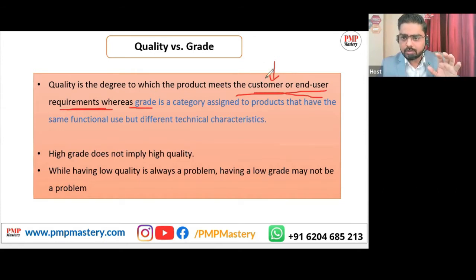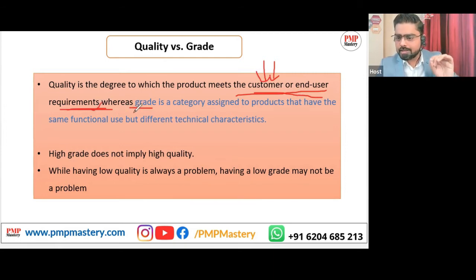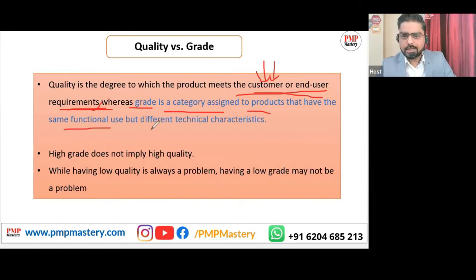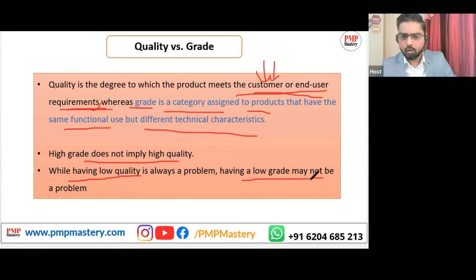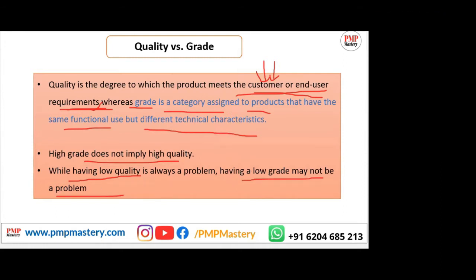Quality is the degree to which the product meets the customer or end user requirements. Grade is a category assigned to products that have the same functional use but different technical characteristics. High grade does not imply high quality. While having low quality is always a problem, having a low grade may not be a problem.